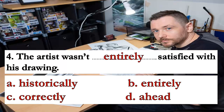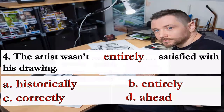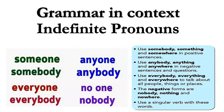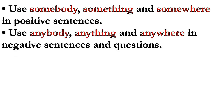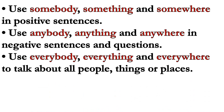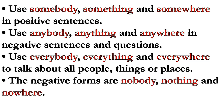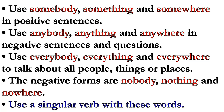Now with grammar in context — indefinite pronouns: someone/somebody, everyone/everybody, anyone/anybody, no one/nobody. We use somebody, something, and somewhere in positive sentences, and nobody, anything, and anywhere in negative sentences and questions. We use everybody, everything, and everywhere to talk about all people, things, or places. The negative forms are nobody, nothing, and nowhere. Use a singular verb with these words.